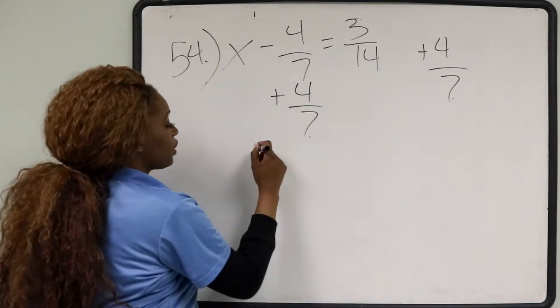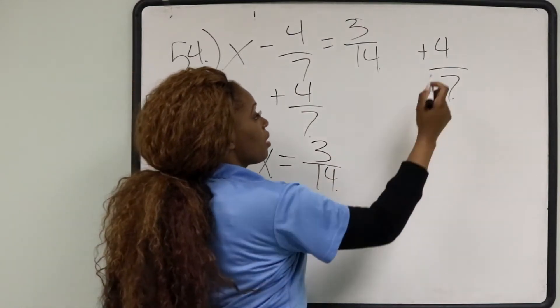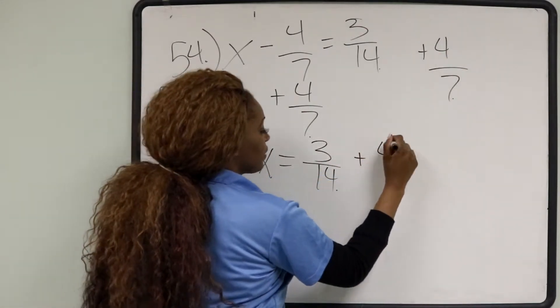So we're just going to be left alone with x equals 3 14ths. And remember, 4 7ths is now positive, plus 4 7ths.